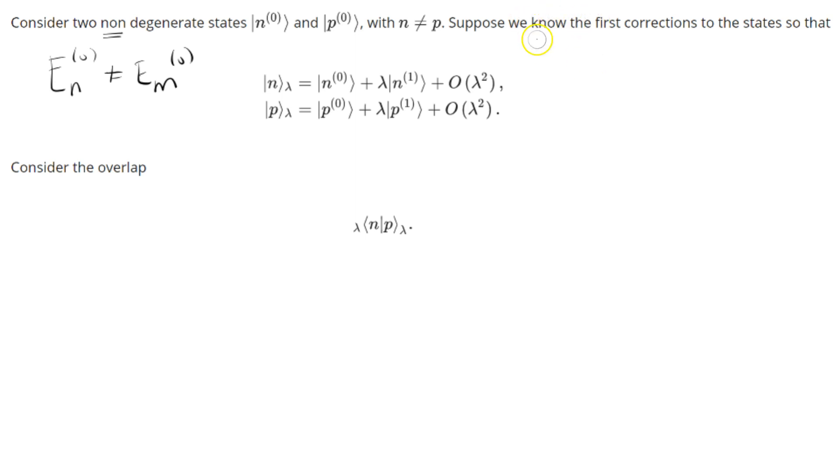Suppose we know the first order corrections. So that's known. And then we can write the states as this, and this is order lambda squared. And let's calculate this overlap.